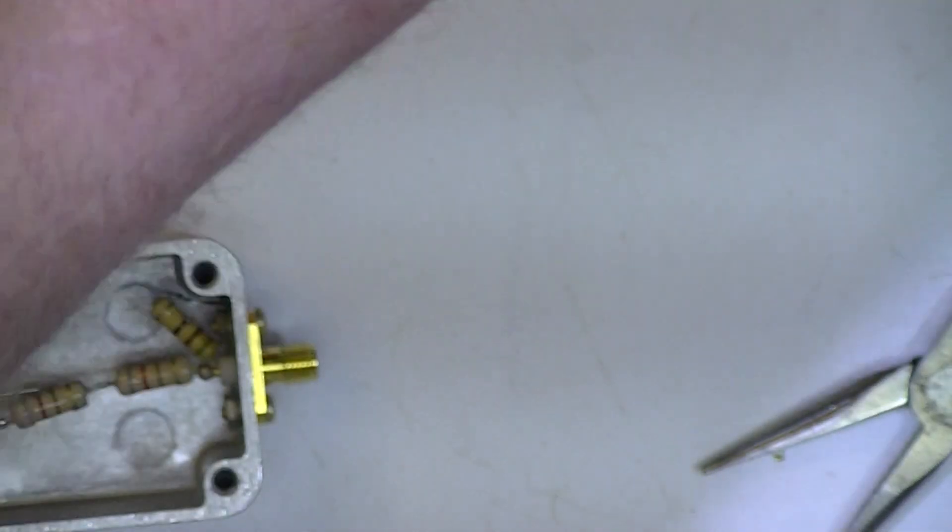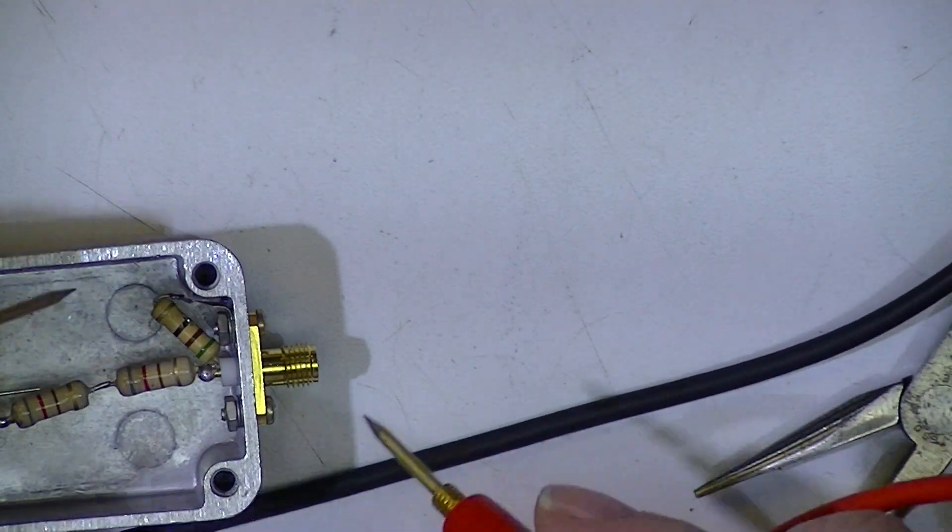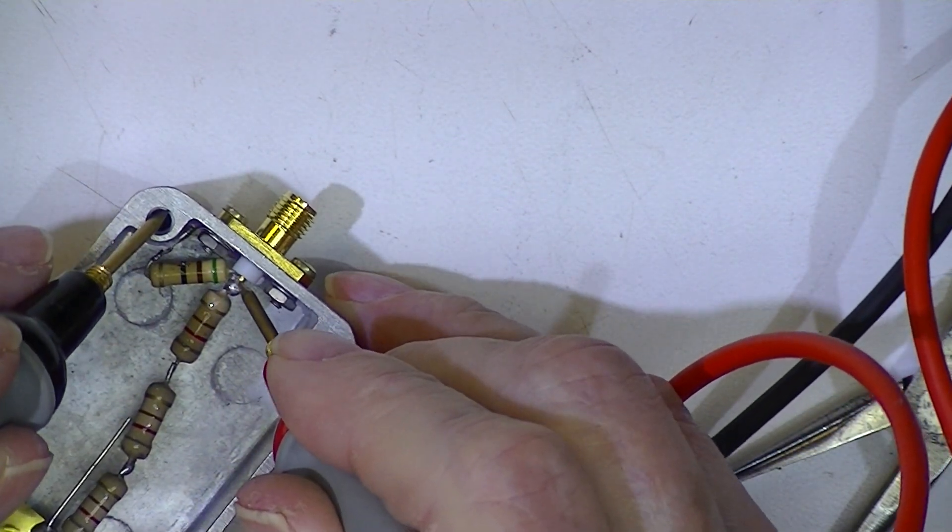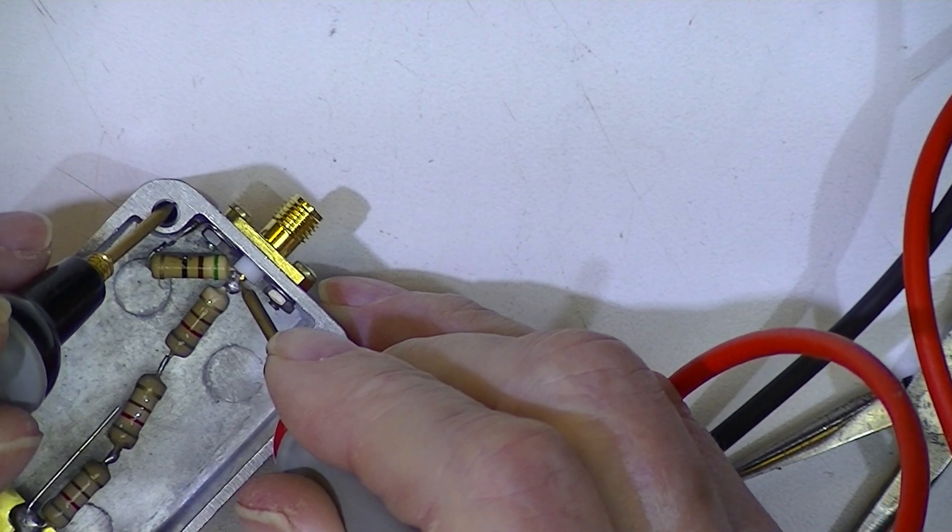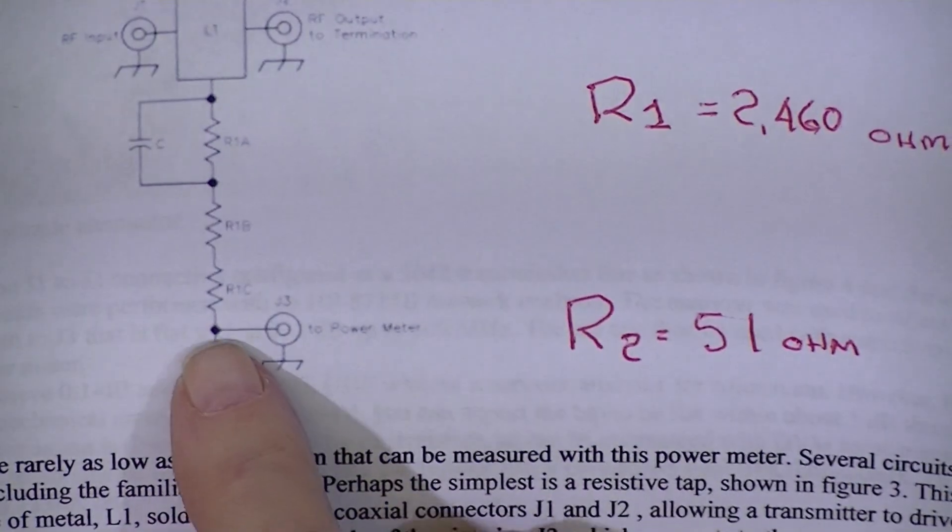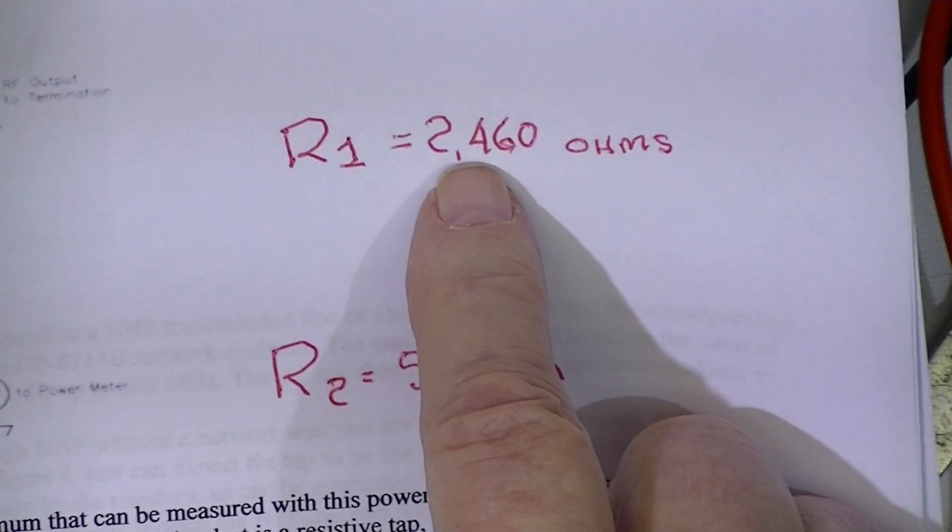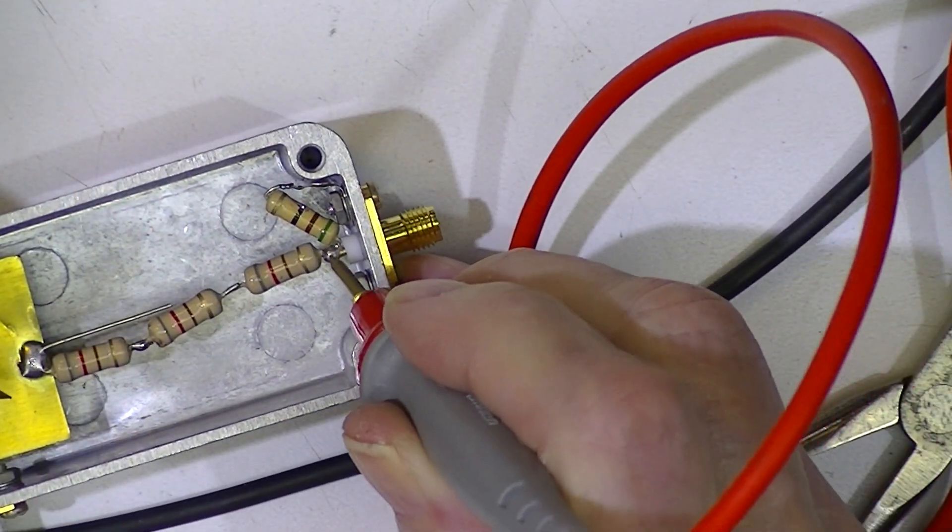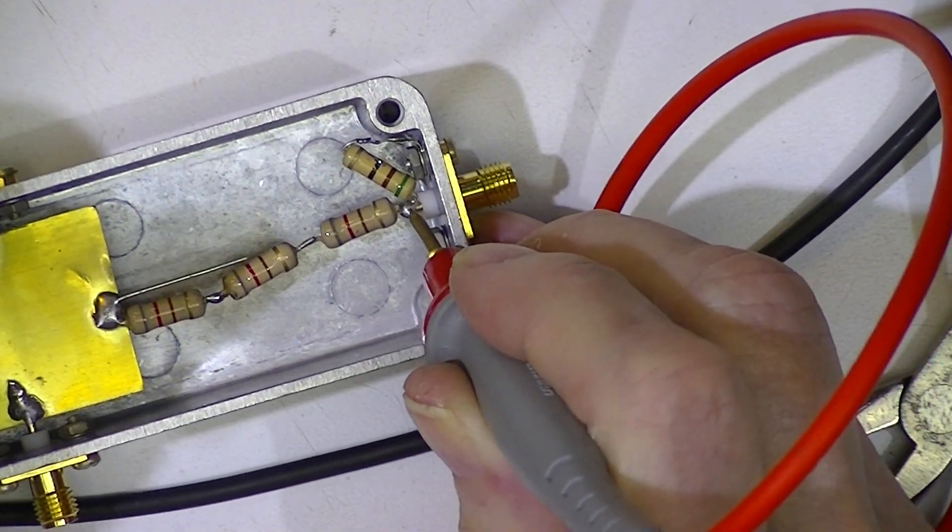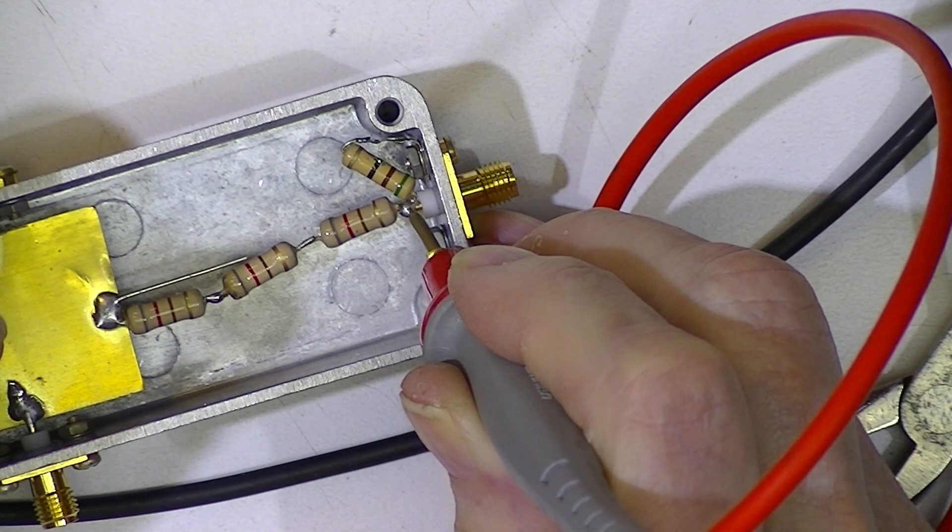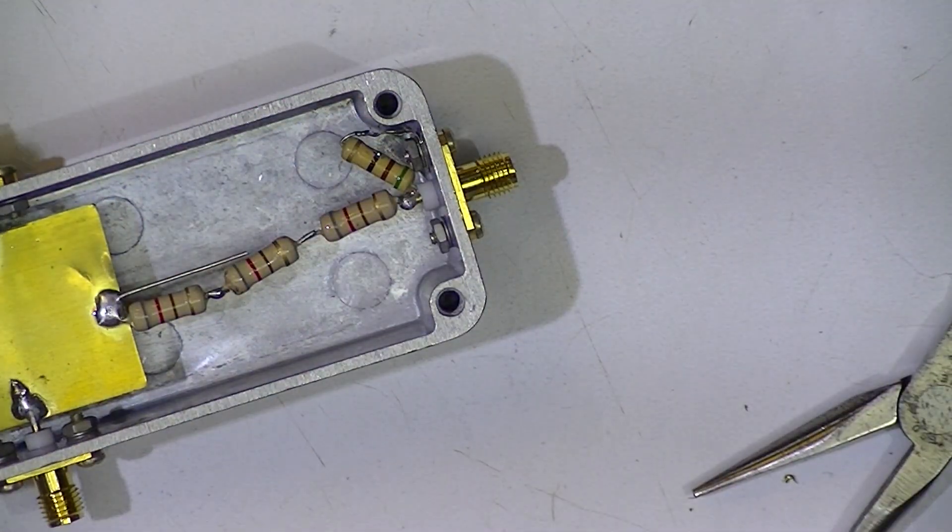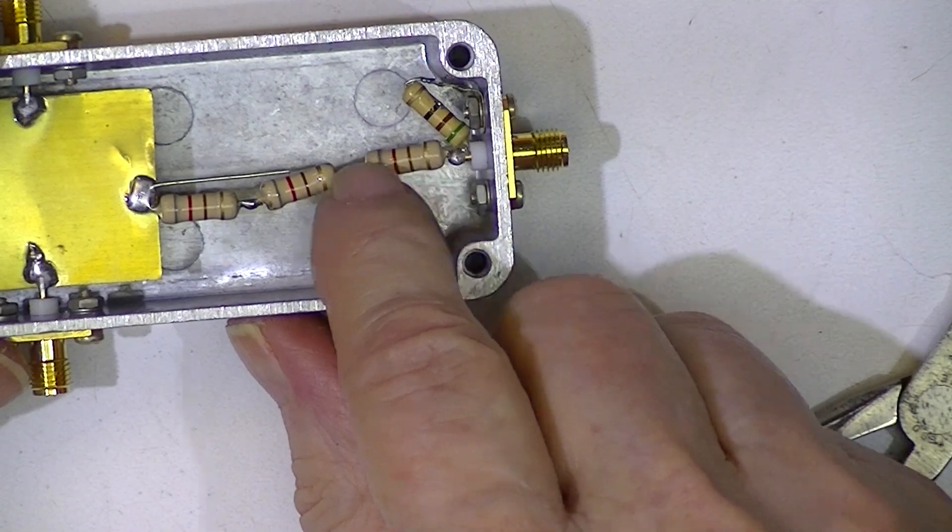it would probably be prudent to make sure that none of the resistances have changed. So from here to the case should read 51 ohms, and it does: 51.02. Here to here should read 2460 ohms. And on my meter it reached 2409 ohms. So that's accounted for by the fact that all of these resistors are on the low side.